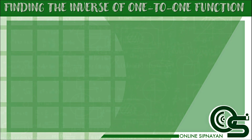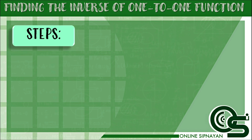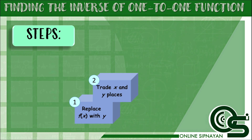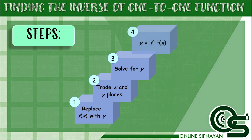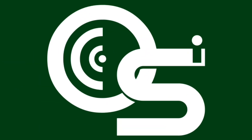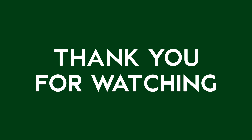To find the inverse of a one-to-one function, there are only four steps. First, replace f of x with y. Second, trade or switch the x and y places. Third, solve for y. And last, replace y with f inverse of x.